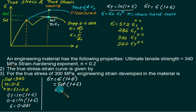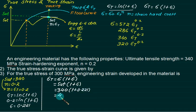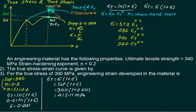The value recorded by the engineering curve is 340. The same value recorded by the true stress-strain curve is 415.11 MPa. Do you know the value of sigma at this point on the true curve? Yes — it is 415.